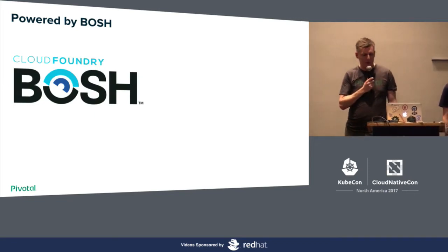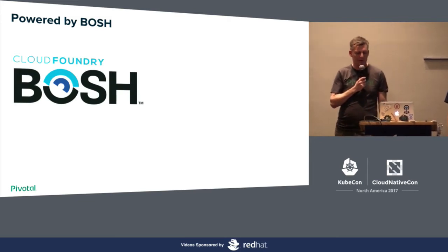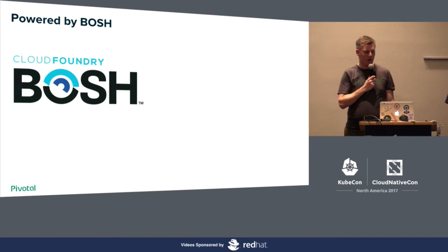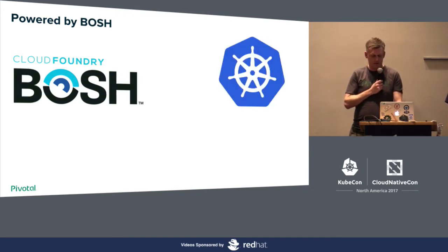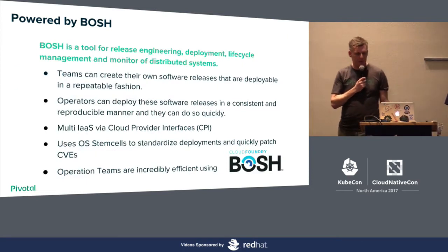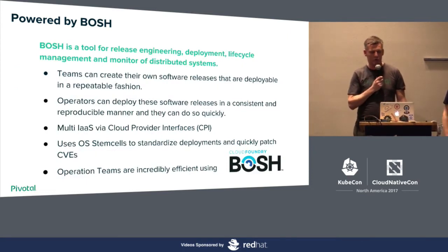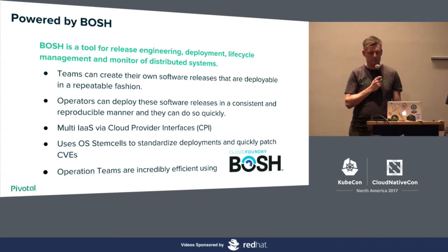We are powered by BOSH. BOSH is a Cloud Foundry project — quite mature, around five years old. It's based on the Google Borg idea of something that manages infrastructure. So we've got Borg and Kubernetes together — that's where we get the Cloud Foundry Container Runtime. BOSH is a tool for release engineering, deployment, lifecycle management, and monitoring of distributed systems. Teams can create software releases deployable in a very repeatable fashion, and operators can deploy them consistently and reproducibly, very quickly.